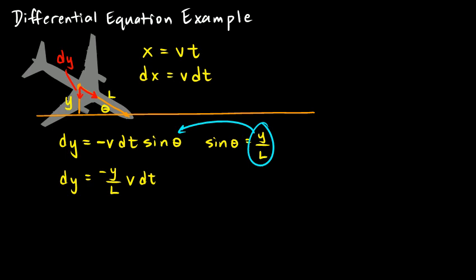And now, we'll just rearrange this a little bit. I'm going to write dy over y is equal to negative v over l times dt. And then we can solve this by integrating. So, we integrate both sides. And the integral of dy over y is the natural log of y. And we have our negative v over l. And the integral of dt is just t. And of course, we have to add a constant of integration.